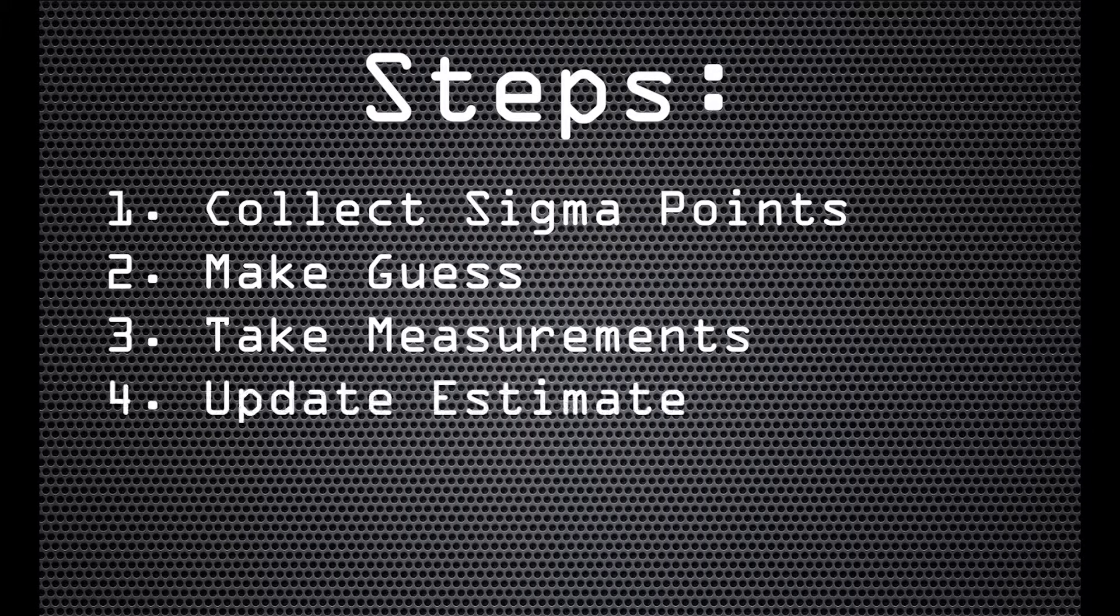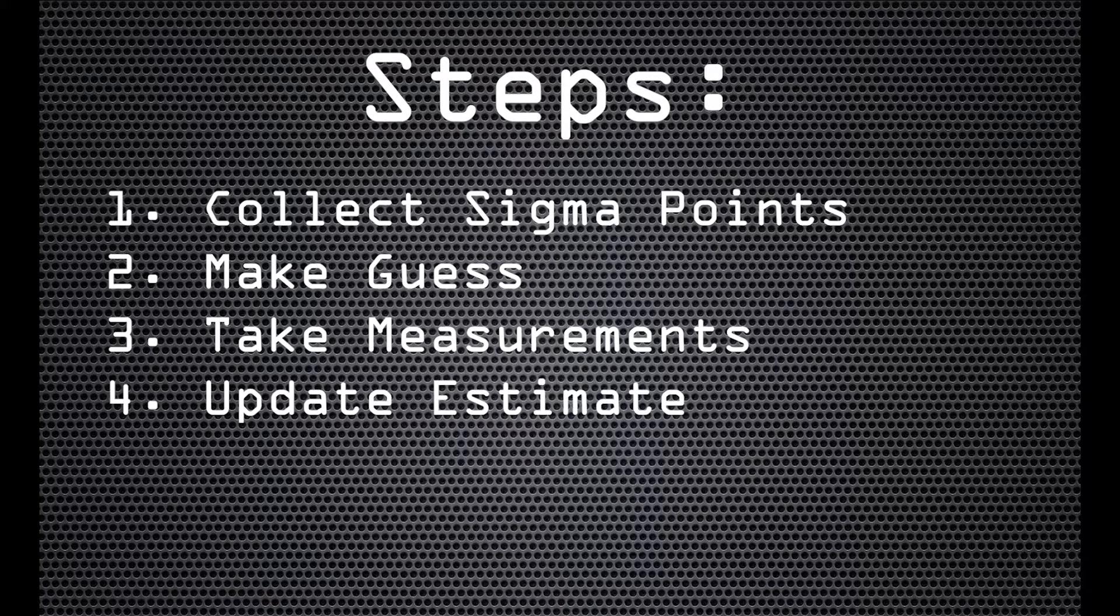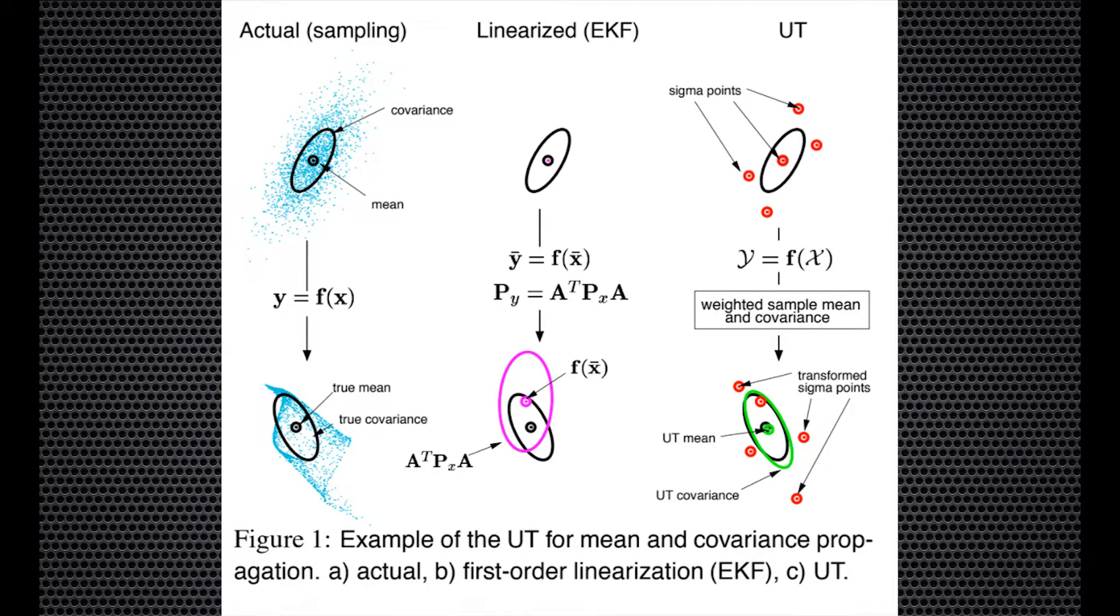Here's a diagram of how that works, from the original paper of Wan and van der Merv. As you can see, determining statistics by raw data collection is a massively taxing process. Linearizing the system to extend the Kalman filter saves time, but lacks accuracy in a serious way.